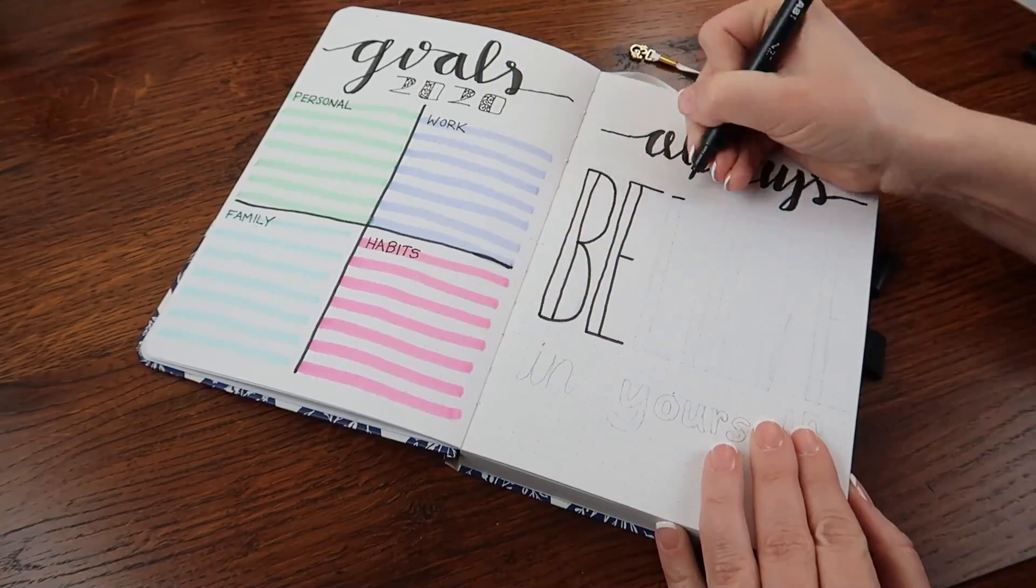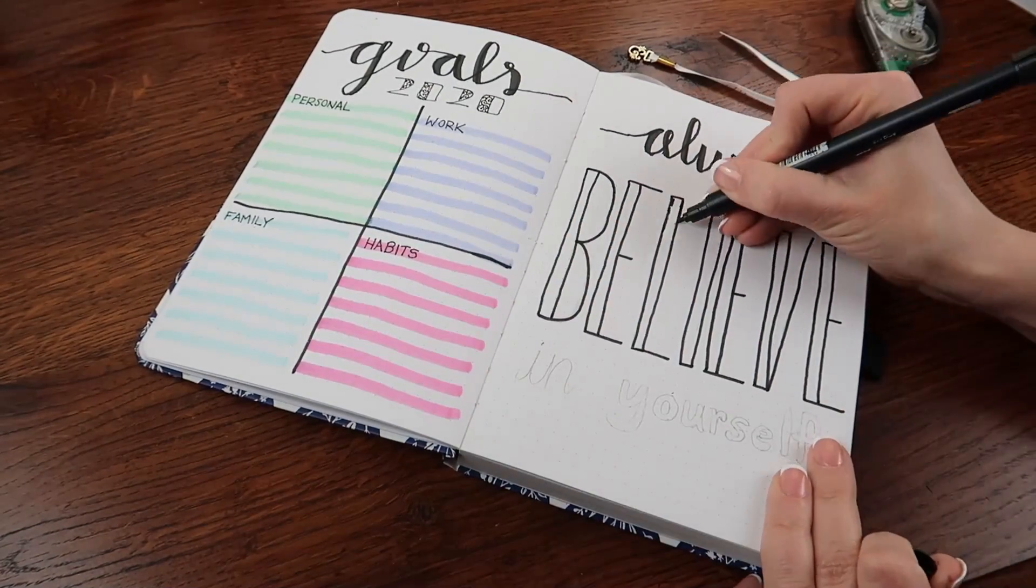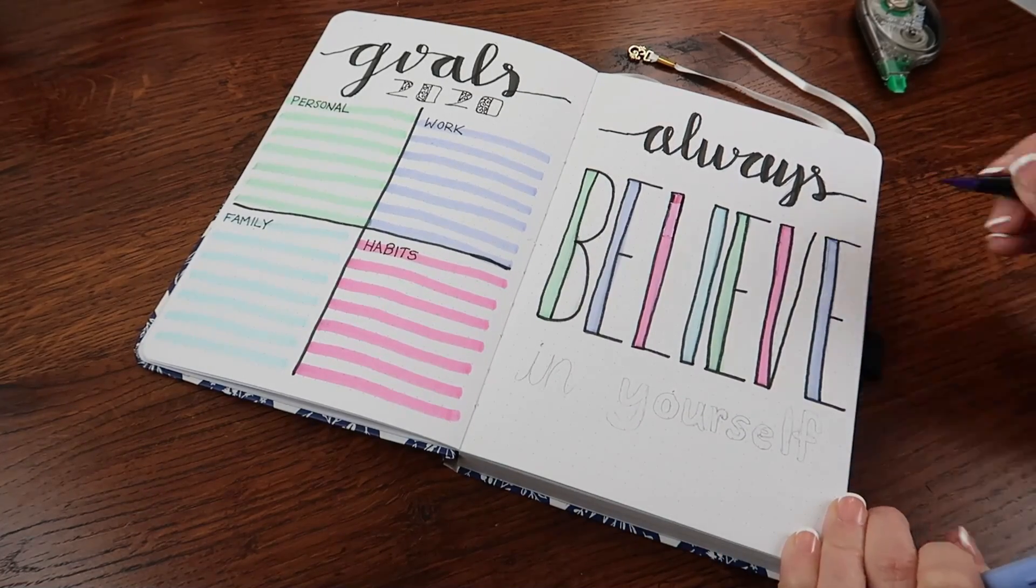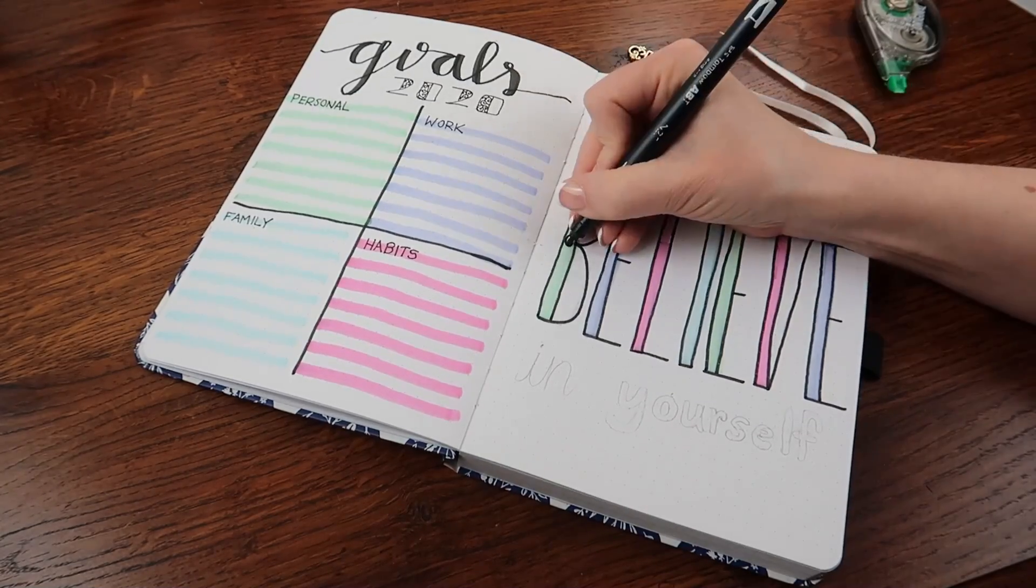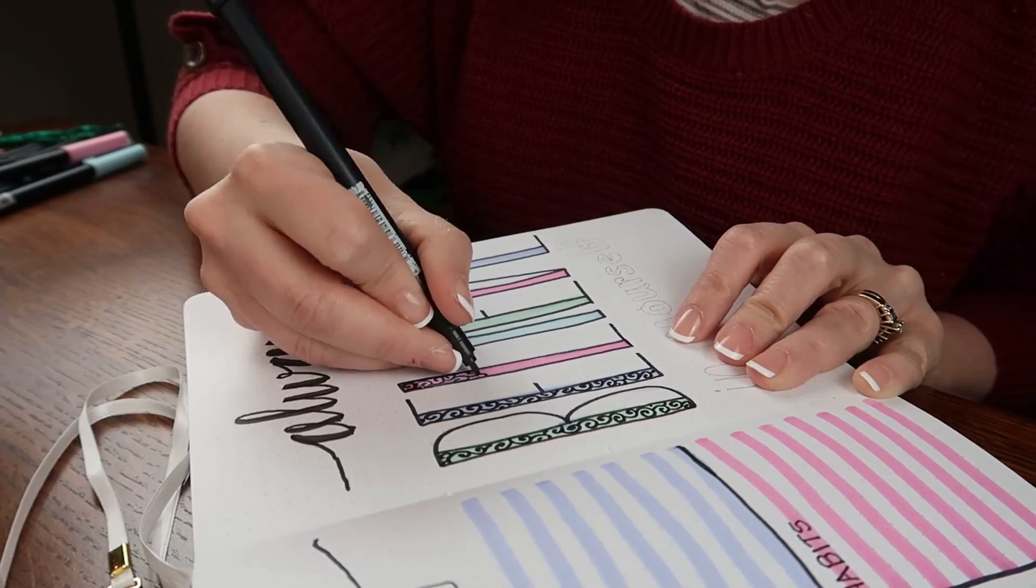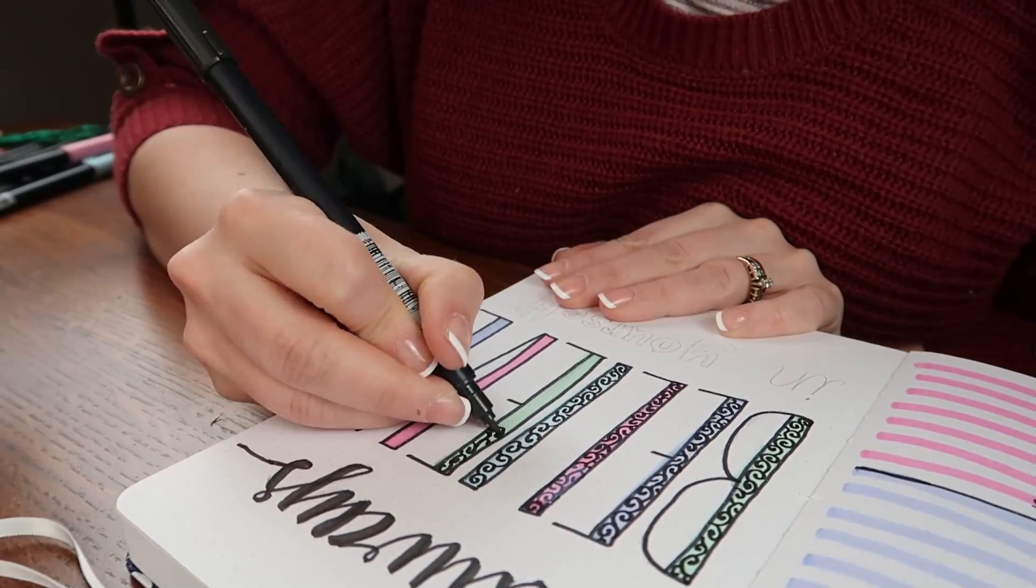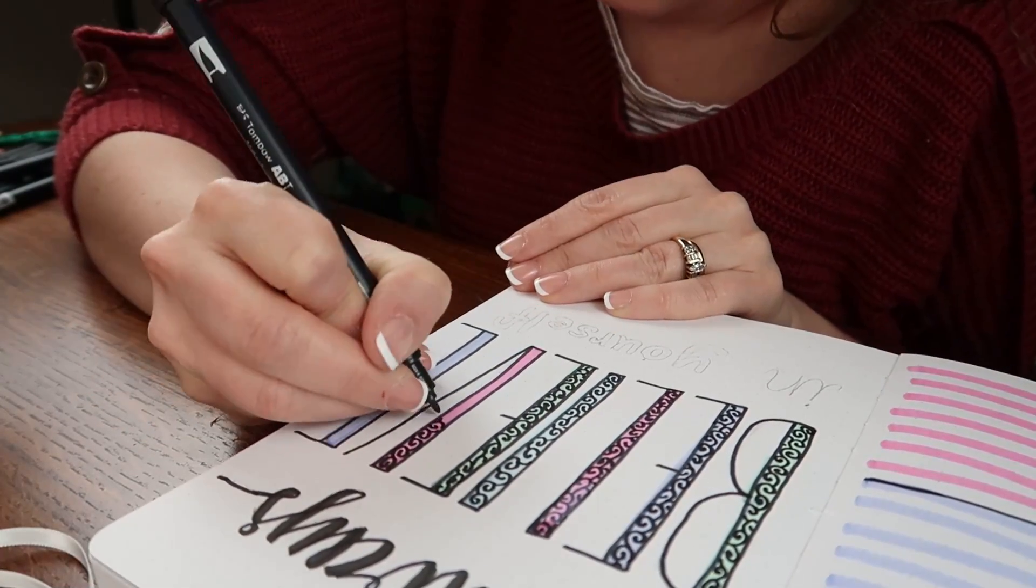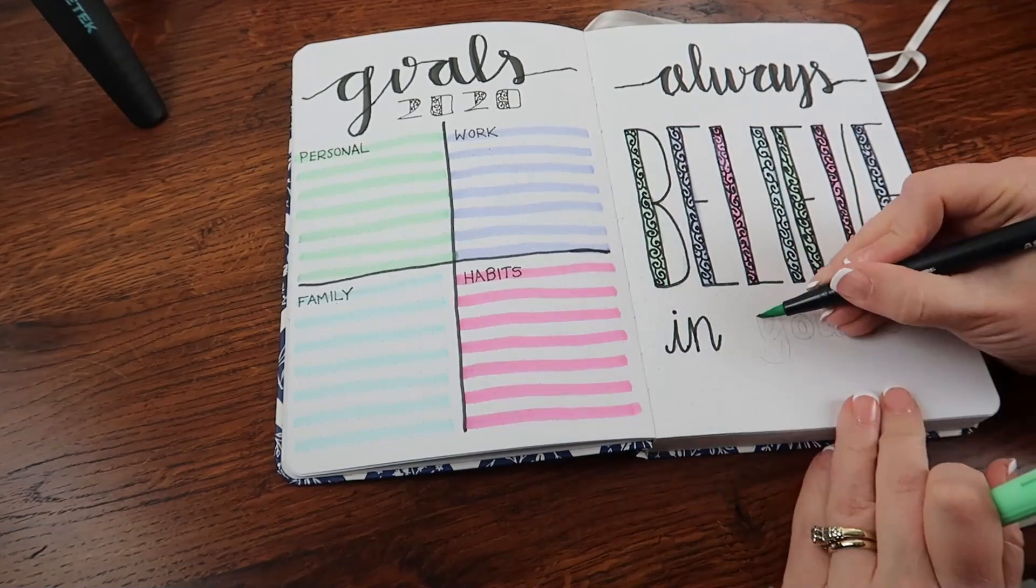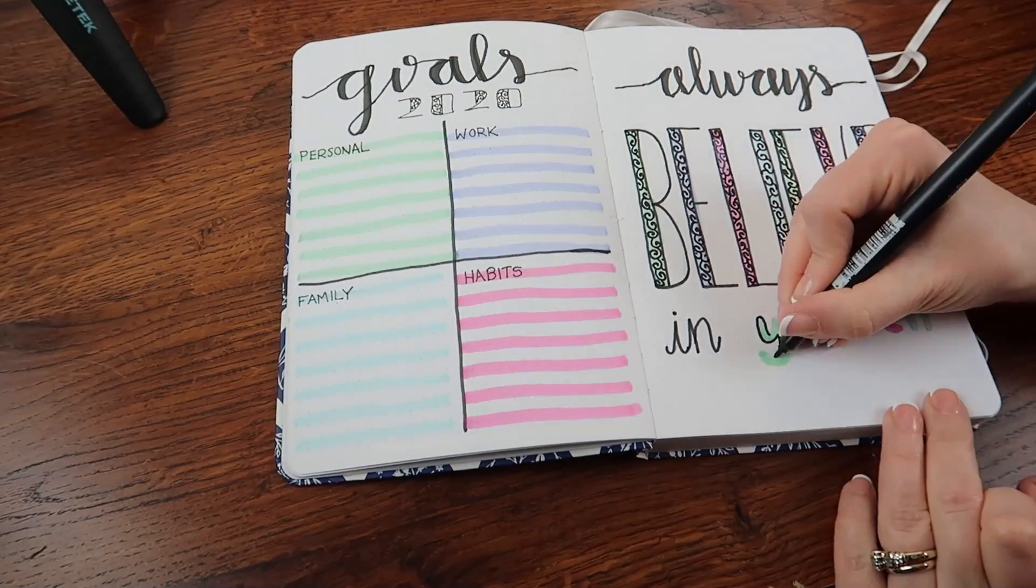My word for 2020 is going to be believe. And that is really believing in myself. So I have this quote here, always believe in yourself. It's just a reminder that I need to remember that I can accomplish things that I really set my mind to. And I need to believe that. And I need to remember that. Last year, my word was focused. And I really love that word because I was having a hard time focusing on the positive things sometimes. I was really down on myself a lot. So I love that word and I almost wanted to use it again until I thought about the word believe. And I think that one works just as well.